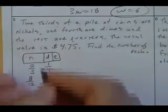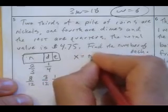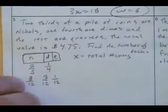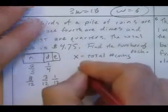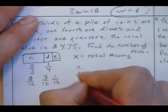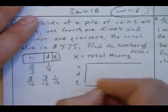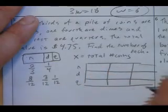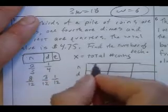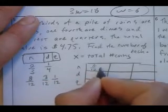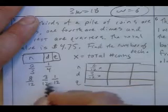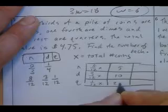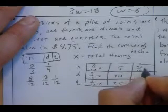And I can call this whole pile the total number of quarters. X be the total number of coins. So let's set up our coin chart. We have nickels, dimes, quarters. What are our numbers? Nickels are 8/12 of the whole thing. This guy is 3/12 of the whole thing. And this guy is 1/12 of the whole thing. You know that's 5, 10, 25.